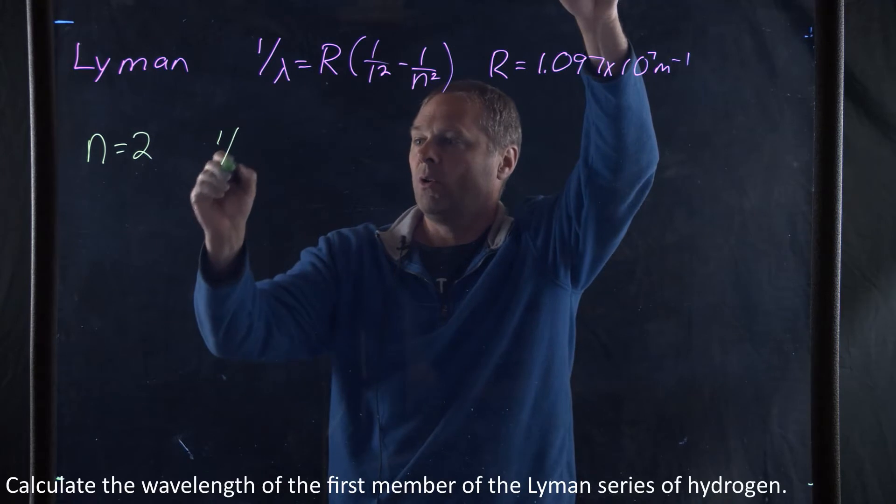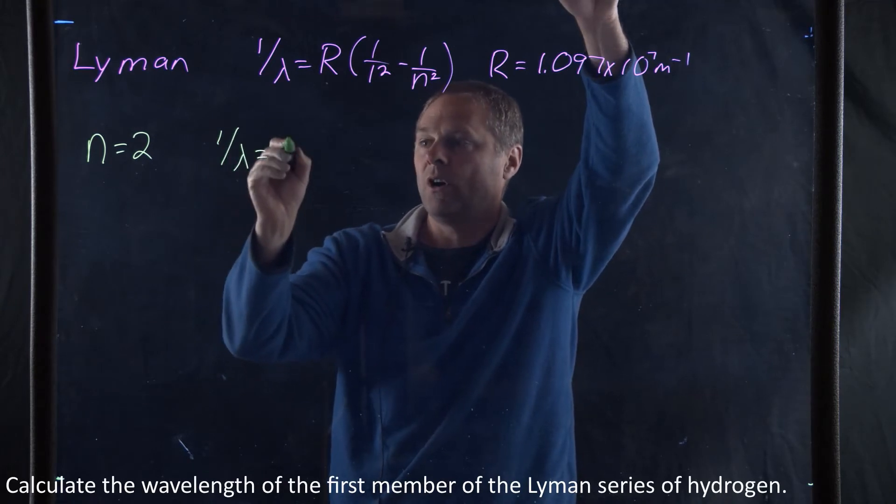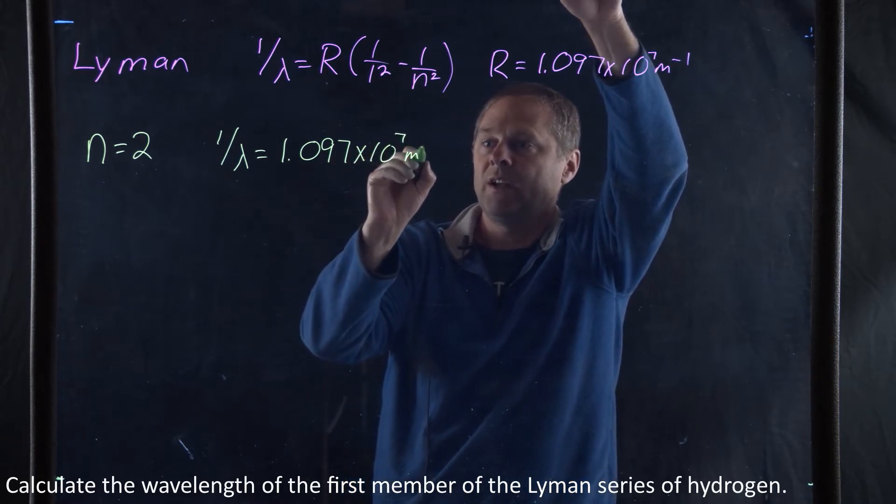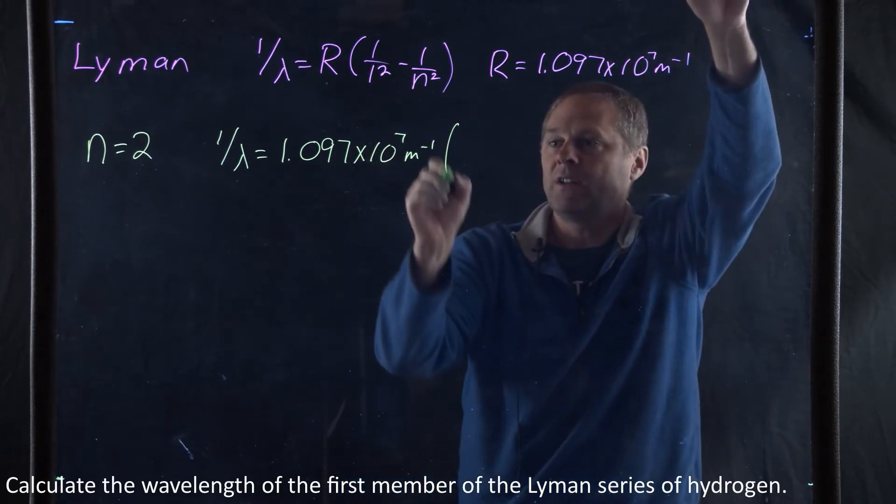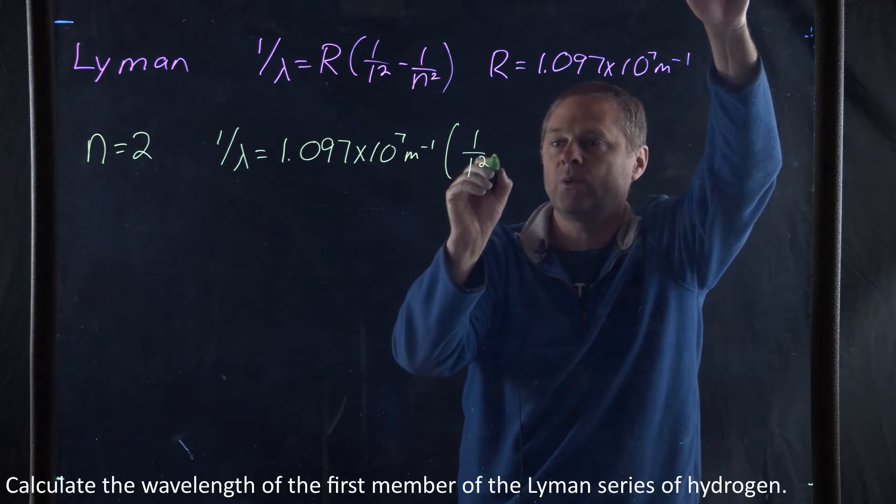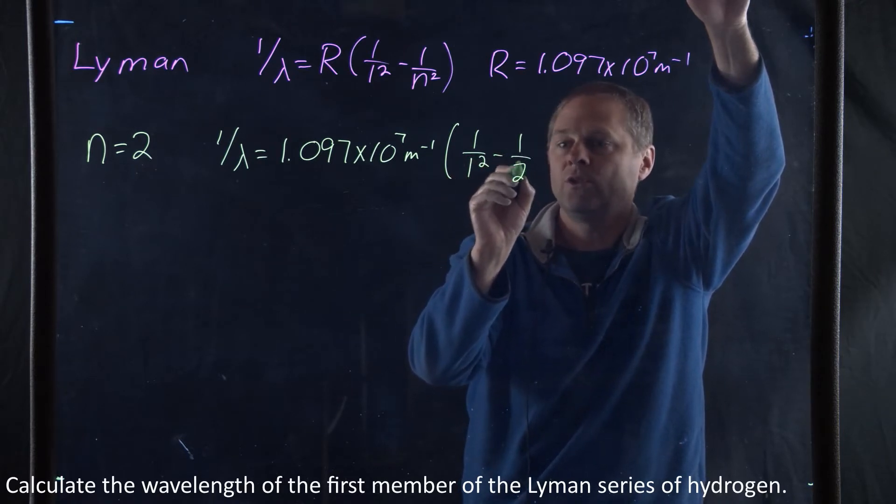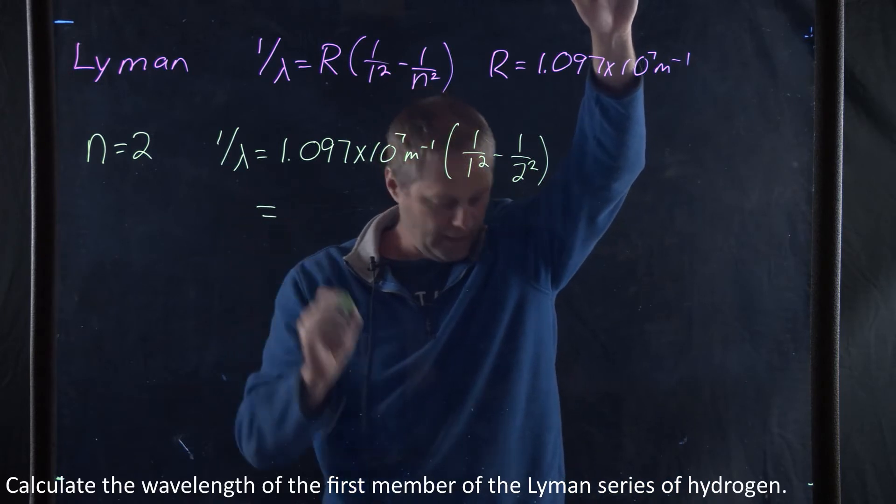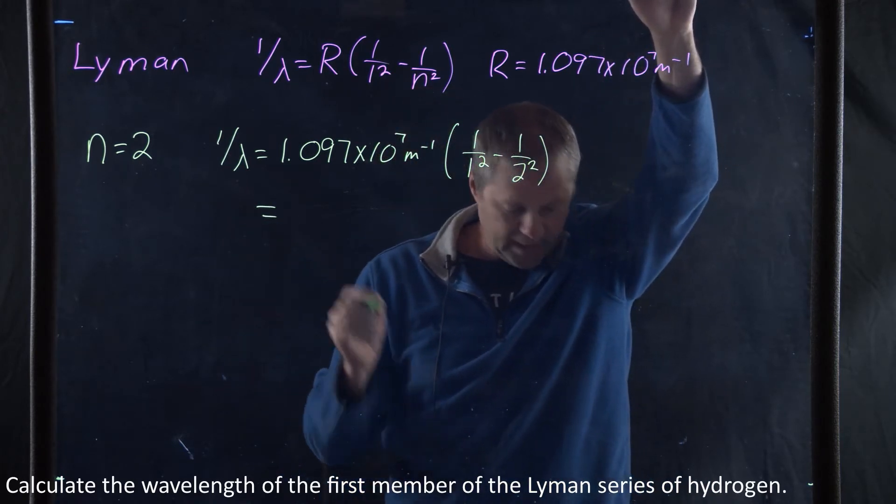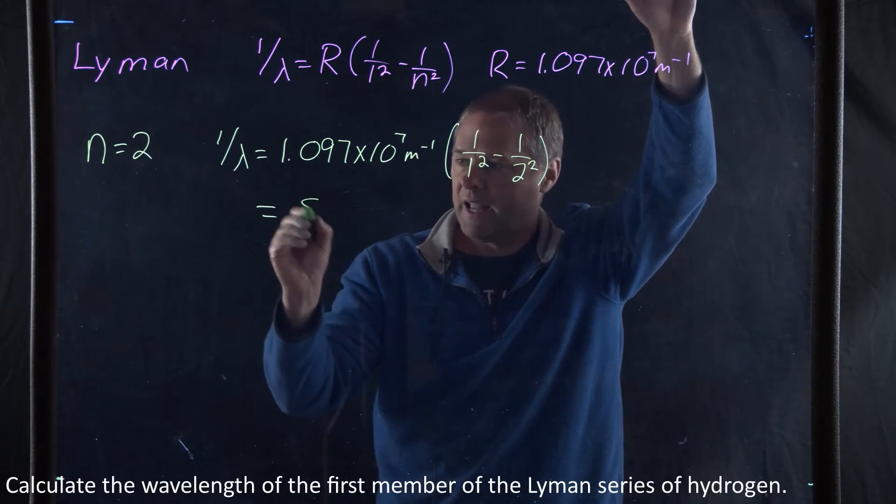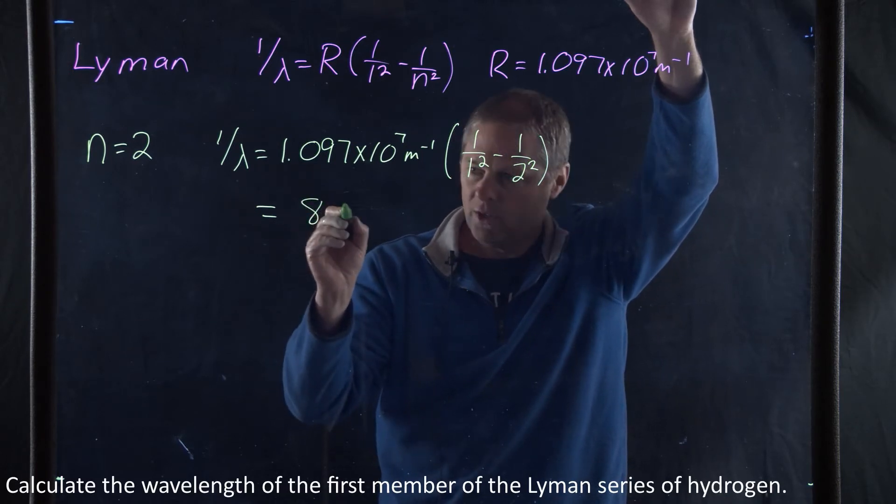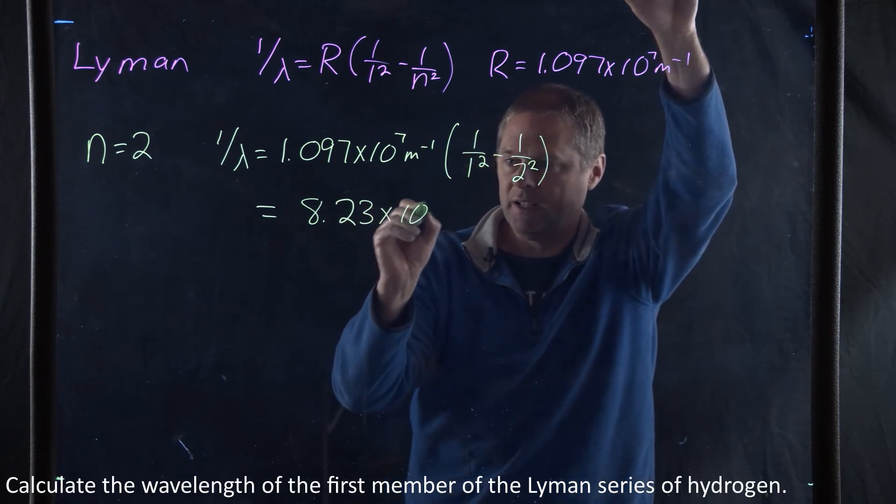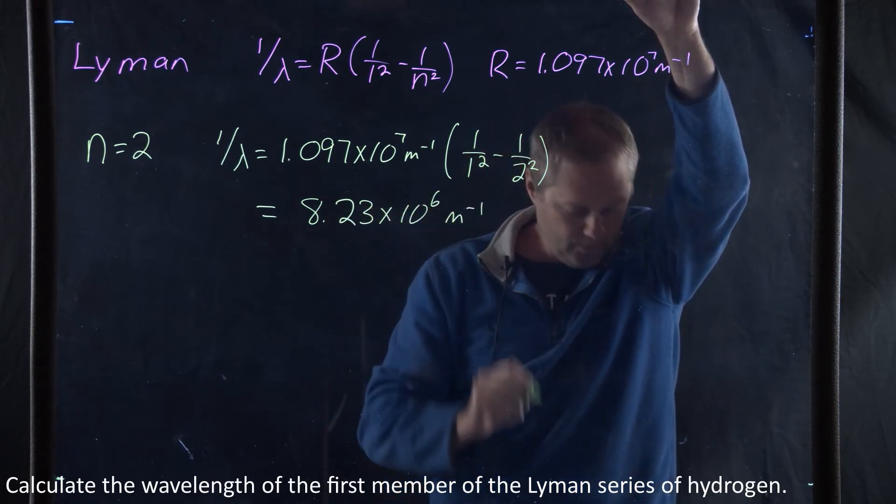So we have 1 over lambda equals R, which is 1.097 times 10 to the 7th inverse meters, times 1 over 1 squared minus 1 over 2 squared. We do this calculation, and what we get is 8.23 times 10 to the 6th inverse meters.